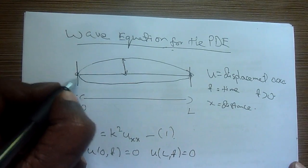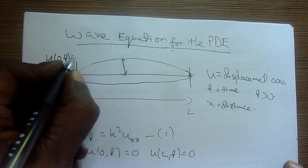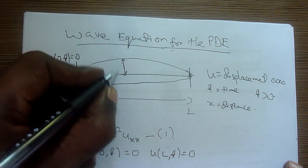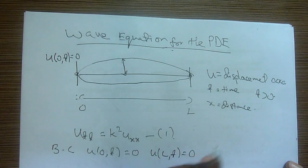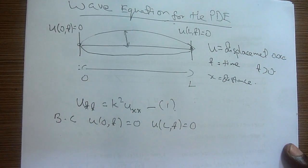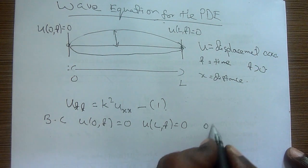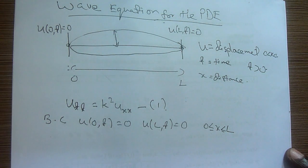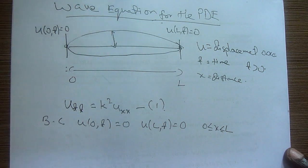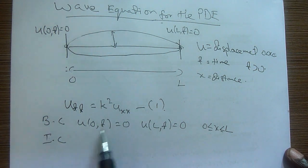Boundary conditions will always be used for zero — displacement at both ends. Can you see any displacement here? No. The displacement is zero. At x=0 the displacement is zero, and at x=L the displacement is also fixed, so U(L,T) equals zero. Try to understand the logic rather than simply remembering formulas.